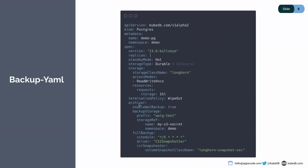In the archival spec, we have the option enable WAL backup, which is set to true. That means we want to archive our WAL continuously. If we set it to false, then we're not going to archive our WAL continuously — we'd just do a base backup only. After that, we have the spec for the backup storage, where we mention the prefix where we're going to store our data and the storage ref where we have the credentials for our S3 bucket.